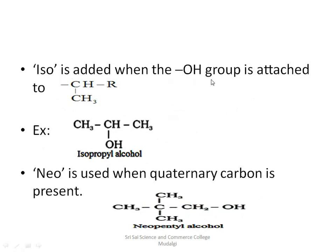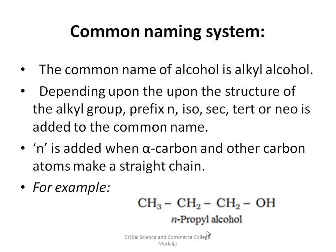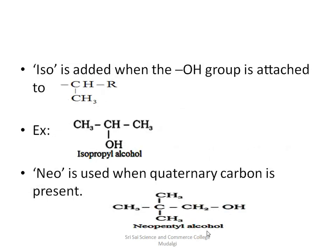In iso-form, the prefix 'iso' is added when there is a branching. If there is a single branching taking place, you call it the iso-form of alcohol — for example, isopropyl alcohol. In neo-form, there is more than one branching — a common example is a quaternary carbon where more than two branchings take place. For example, neopentyl alcohol. So we have n-form, iso-form, and neo-form as the common nomenclature categories.